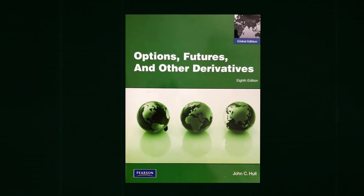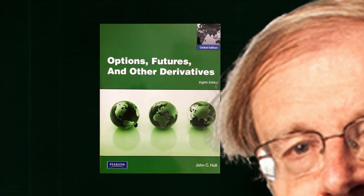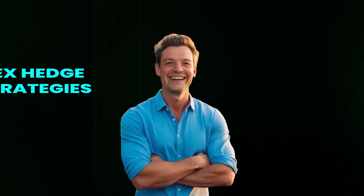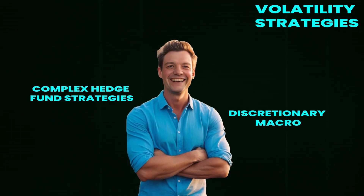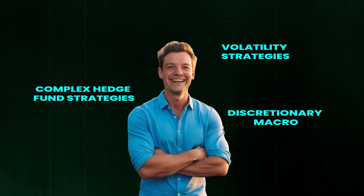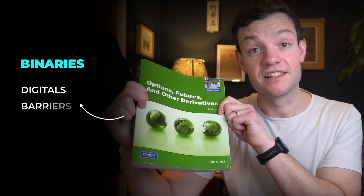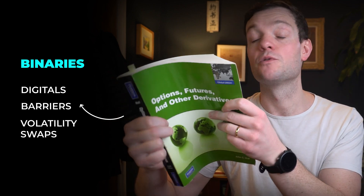The second book is Options, Futures and Other Derivatives by John Hull. This is another recommended reading book for the finance and derivatives specialty of the actuarial profession. It's a great reference book — very thick with a lot of information, but it covers everything. I used it a lot at the start of my career when researching complex hedge fund strategies, such as discretionary macro and volatility strategies. I had to understand all the complicated options being used — binaries, digitals, barriers, volatility swaps — and this covers them all quite nicely.